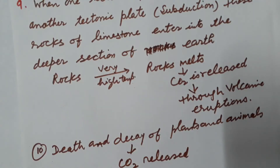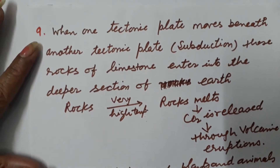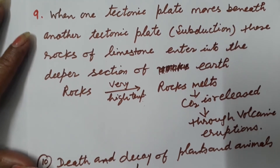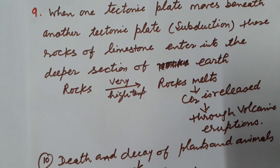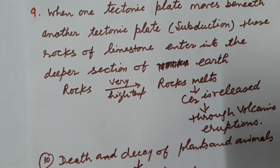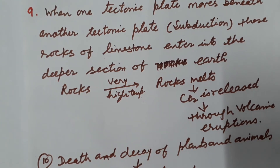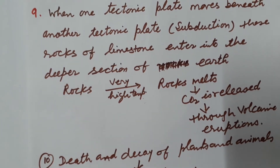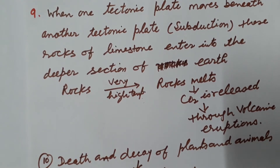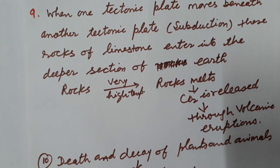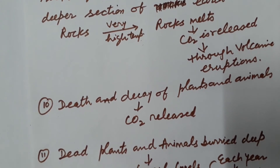When rock formation takes place in nature, layers of rocks build up and the limestone gets pushed into deep layers. Deep inside the earth's surface there is very high temperature, rocks melt, and CO2 is released. During volcanic eruptions, this CO2 is released back into the environment.